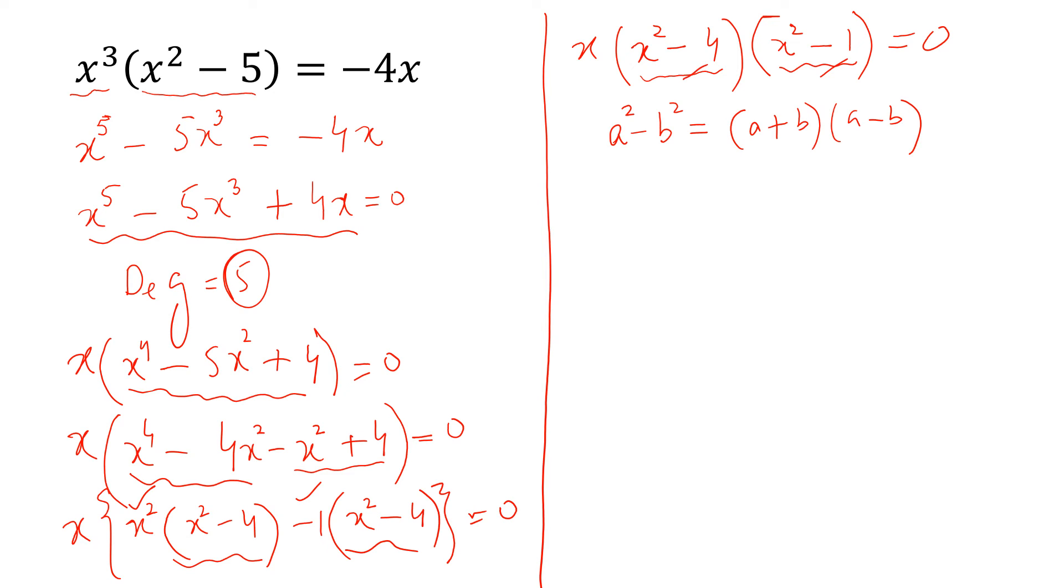We can split these two terms and we can write x into this can be written x plus 2 into x minus 2. Similarly, for this we can write x plus 1 into x minus 1 is equal to 0.